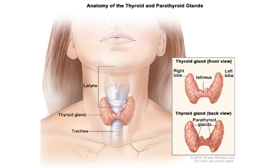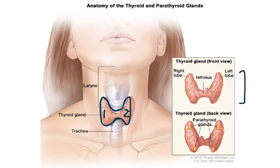The thyroid gland itself is H-shaped or butterfly-shaped. It has two lobes — the right lobe and the left lobe. These two lobes are connected with the isthmus. Here you can see they are labeled.